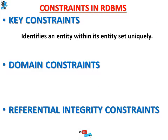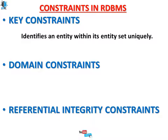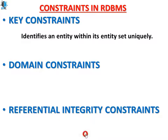Key constraints: in one line, key constraints identify an entity within its entity set uniquely. Whenever we have a relationship among different tables, an entity set is created, and key constraints identify the unique entities within that set. We will discuss this in more detail in coming slides.